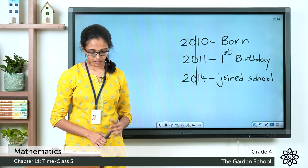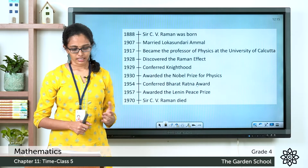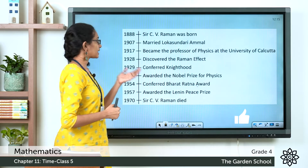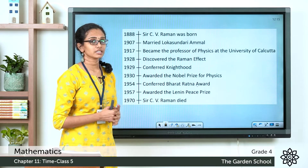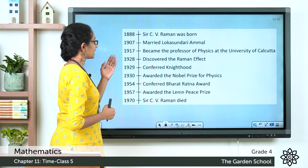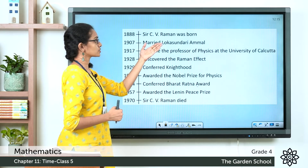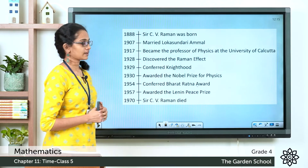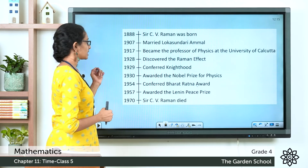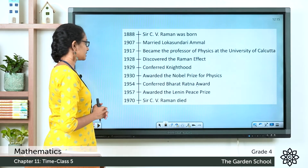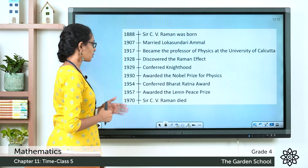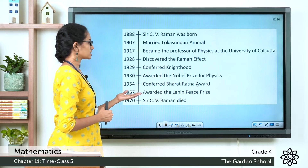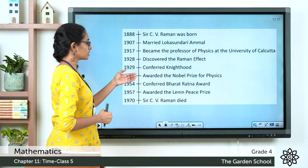In your textbook, please turn to page 160, where you can see important events in Sir C.V. Raman's life on a timeline. In 1888, Sir C.V. Raman was born. In 1907, he married Lokasuntari Ammar. In 1917, he became Professor of Physics at the University of Calcutta. In 1928, he discovered the Raman Effect. In 1929, he was conferred knighthood. In 1930, he was awarded the Nobel Prize for Physics. In 1954, he was conferred the Bharat Ratna award. In 1957, he was awarded the Lenin Peace Prize, and in 1970, Sir C.V. Raman passed away.